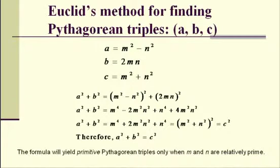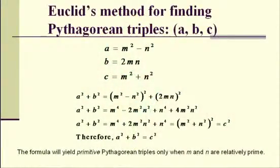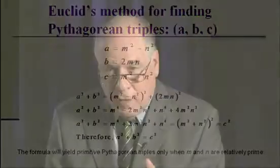Euclid did a little bit of number theory and came up with formulas to generate Pythagorean triples — the three sides of a right triangle: A, B, and C. For values of M and N, you get A equals M squared minus N squared, B equals 2MN, and C equals M squared plus N squared. If you use relatively prime M and N, you get what we call primitive Pythagorean triples — those with no common factor, like 3, 4, 5 or 5, 12, 13. A non-primitive example would be 6, 8, 10, because those share a common factor of 2.